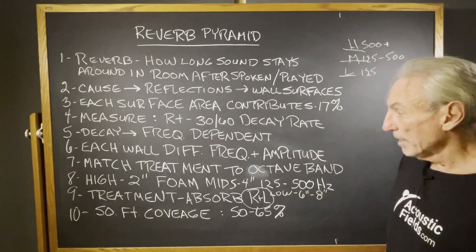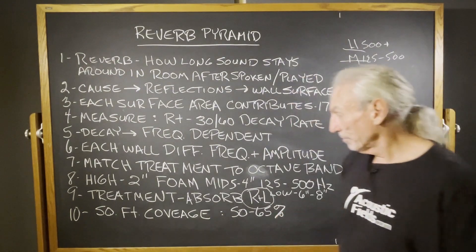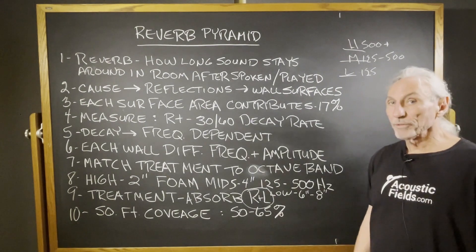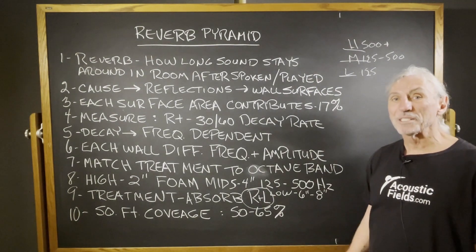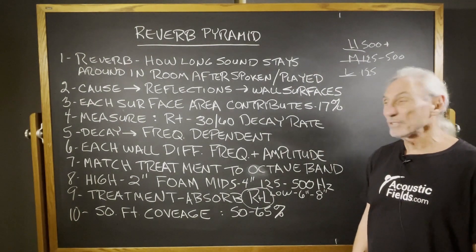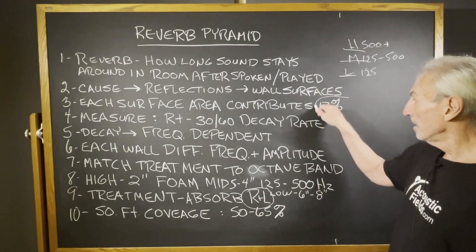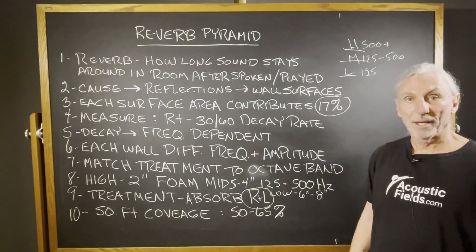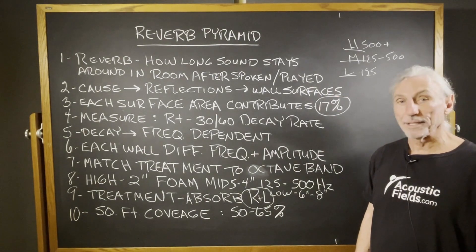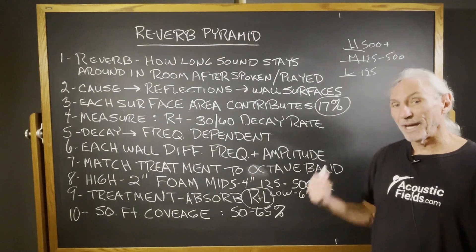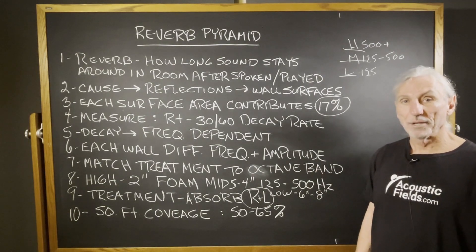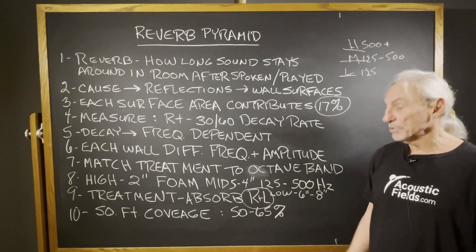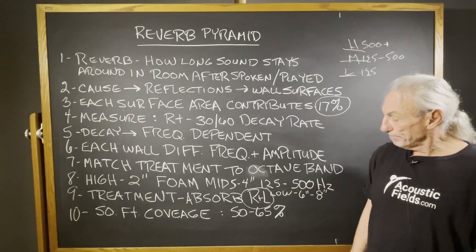Remember, it's all about coverage — square footage of coverage. Most of these large venues require 50 to 65 percent surface area coverage on each surface area, and this is a budget breaker. But you have to have the coverage in order to get the complete resolution that you're after in the room.